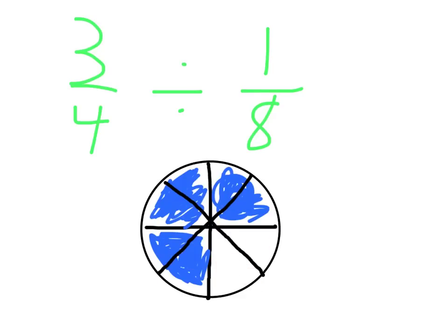One, two, three, four, five, six, seven, eight. And we're seeing how many of those eighths there are in the three-fourths that we shaded. And we can see, one, two, three, four, five, six.